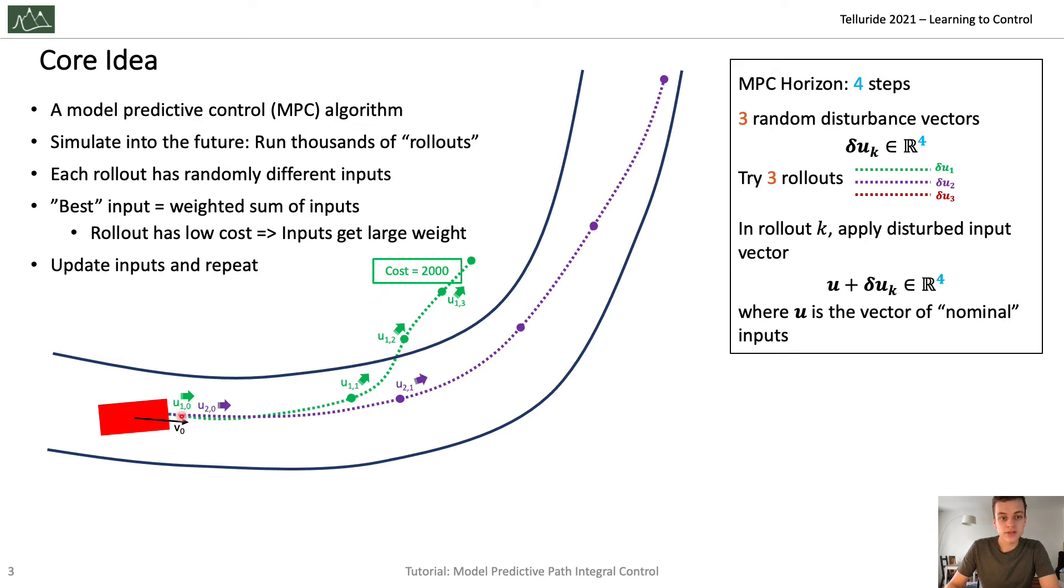Then you do the same thing again for the second rollout. In this case, the inputs are lucky because they actually produce a very good trajectory with a very low cost of 100. And in the third rollout, you see that the car goes off the track pretty quickly and doesn't recover. So you accrue a cost of 5,000 for that trajectory.